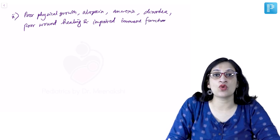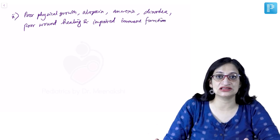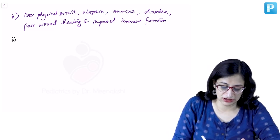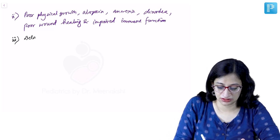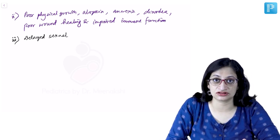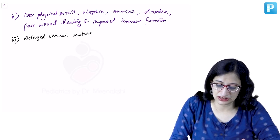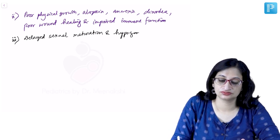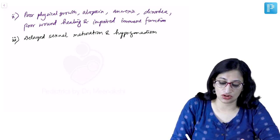And in older children or adolescents you can get delayed sexual maturation and hypogonadism. Delayed sexual maturation and hypogonadism is seen in adolescence.